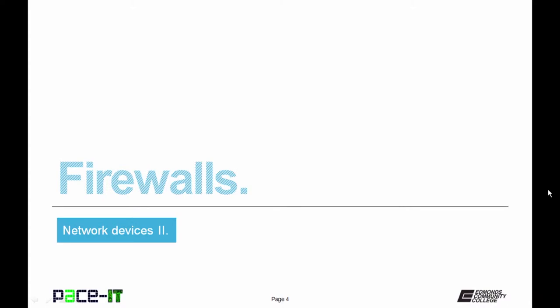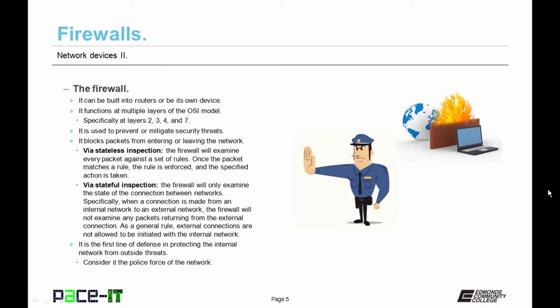Let's begin our discussion by talking about firewalls. The firewall can be built into a router, or it can be its own device. The firewall functions at multiple layers of the Open System Interconnect model, the OSI model. Specifically, it operates at layers 2, 3, 4, and 7. It's used to prevent or mitigate security threats.